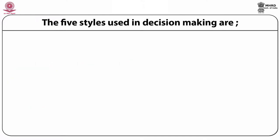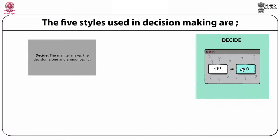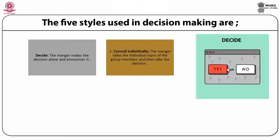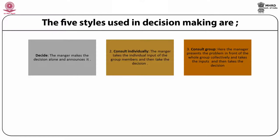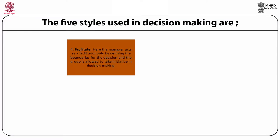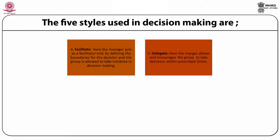The five styles used in decision making are: one, decide — the manager makes the decision alone and announces it; two, consult individually — the manager takes individual input from group members and then decides; three, consult the group — the manager presents the problem to the whole group collectively, takes inputs, then decides; four, facilitate — the manager acts as a facilitator by defining boundaries for the decision and allows the group to take initiative; and five, delegate — the manager allows and encourages the group to take decisions within prescribed limits.